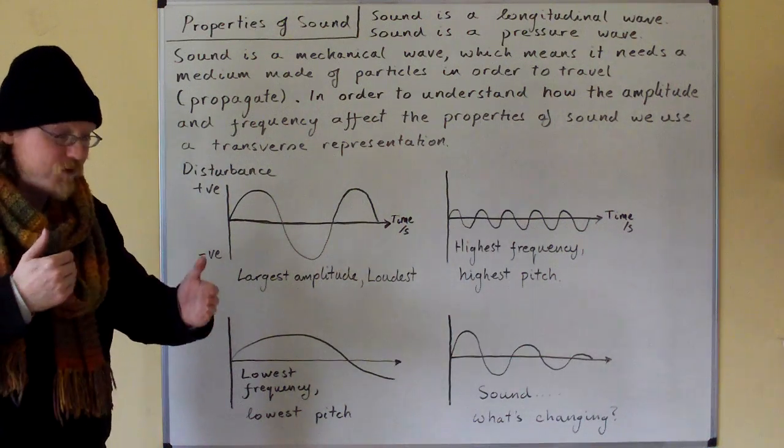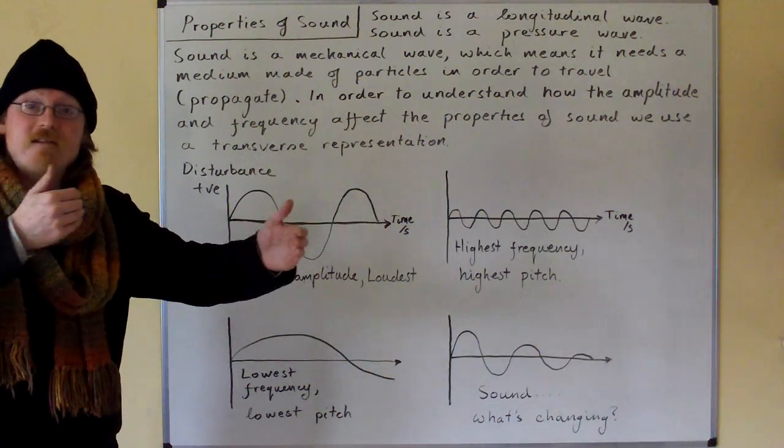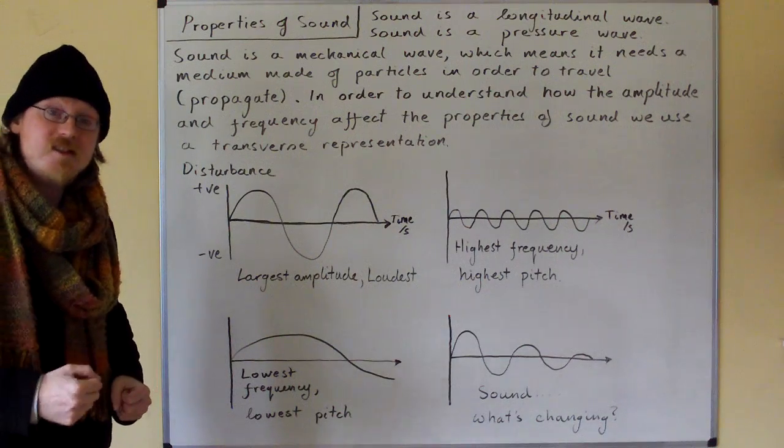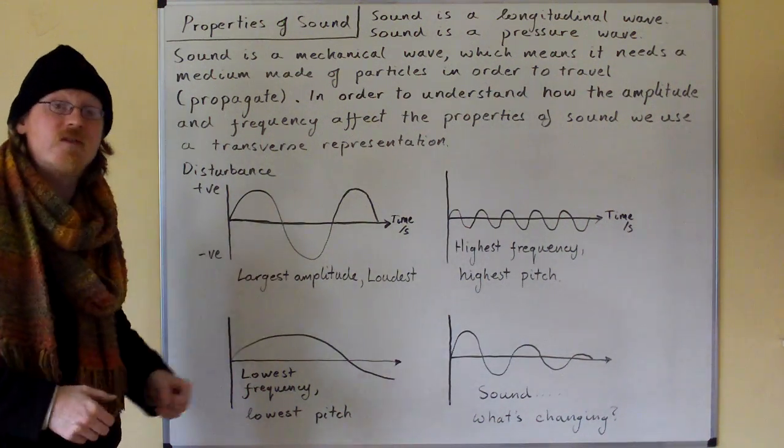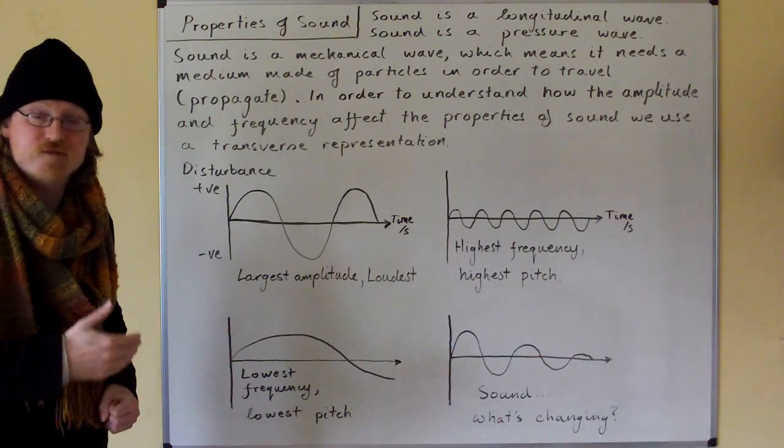it has areas of compression and areas of rarefaction. But we can't show that easily, so instead we show the compressions and rarefactions as peaks and troughs. We use a transverse representation.